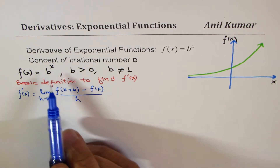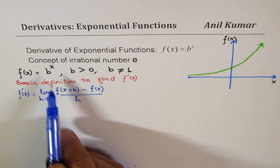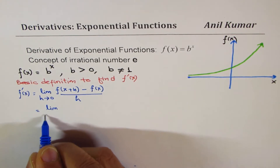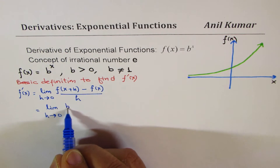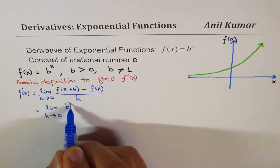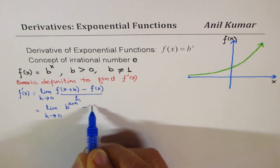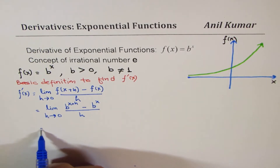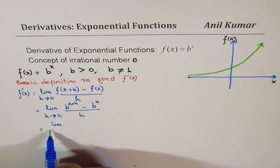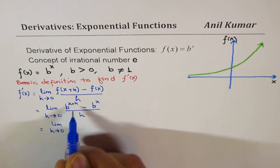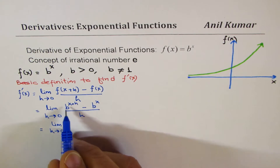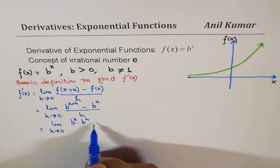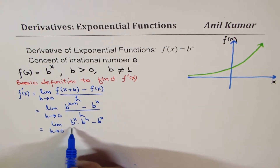Now the function is b to the power of x, so I'll replace this function with b to the power of x. We get limit h approaches 0 of b to the power of x plus h minus b to the power of x, over h. Using the properties of exponents, b to the power of x plus h can be written as b to the power of x times b to the power of h, minus b to the power of x, over h.